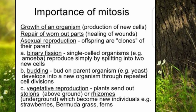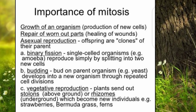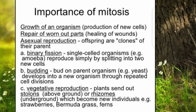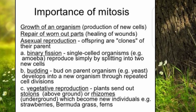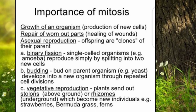In mitosis, no crossing over takes place. This means that the genetic information present in the parents is transferred to the daughter cell without any change, so the daughter cells will have the same characteristics as the parent cell. For example, Dolly the sheep was produced by cloning.